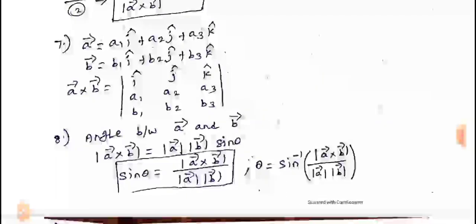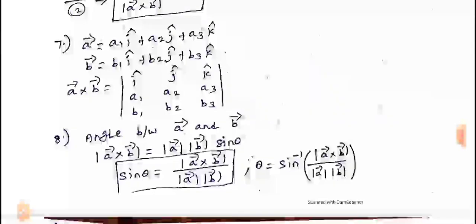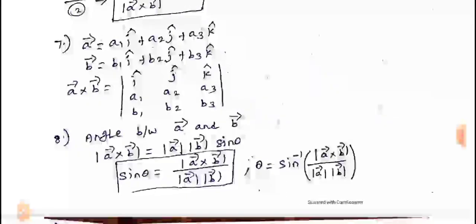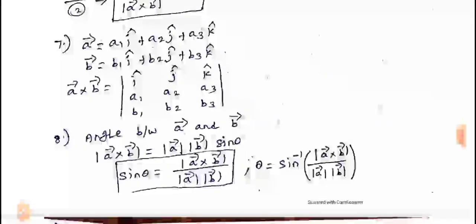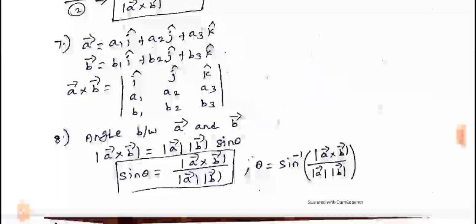Seventh property — components. A vector equals a1 i vector plus a2 j vector plus a3 k vector. B vector equals b1 i vector plus b2 j vector plus b3 k vector. To find A vector cross B vector, use the determinant with i, j, k in the first row; coefficients a1, a2, a3 in the second row; and b1, b2, b3 in the third row. Then expand the determinant.